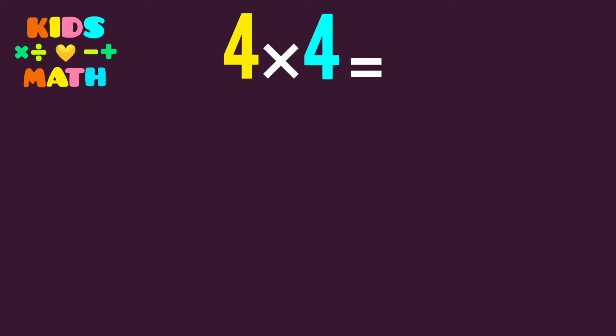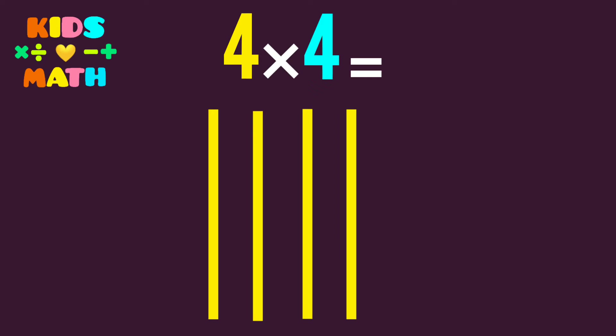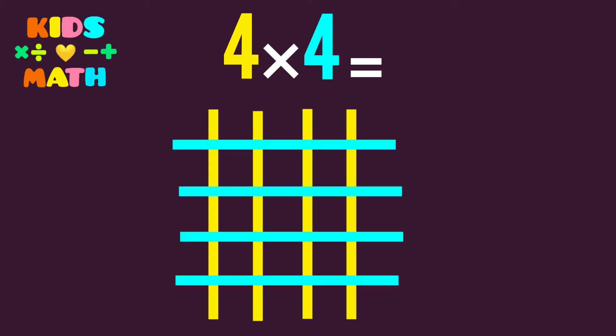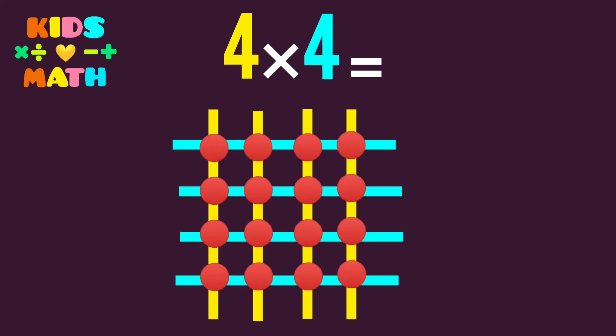4 times 4. The first number is 4, so we derive 4 lines. The second number is 4, so we derive 4 lines. Then we count the common points.